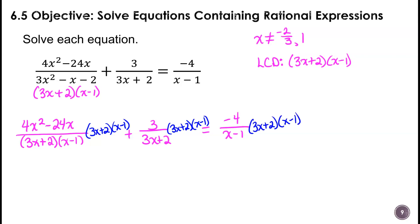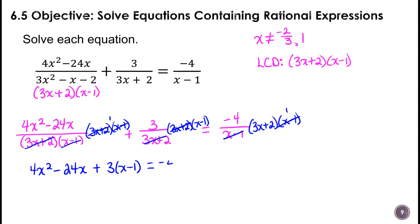We take out the 3x plus 2 and the x minus 1 — remember that equals 1, and multiplying by 1 doesn't change anything — so the numerator of the first expression gives us 4x squared minus 24x. Then we eliminate the 3x plus 2. On the other side of the equal sign we have negative 4 times 3x plus 2. So we get 4x squared minus 24x plus 3x minus 3 equals negative 12x minus 8.